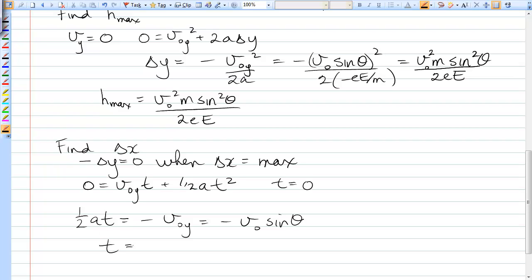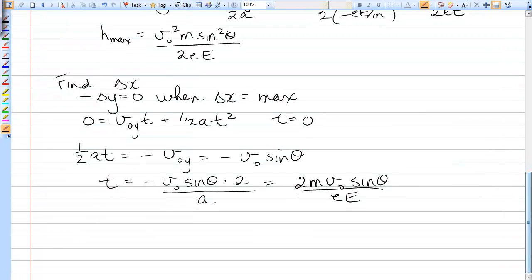And so we can get that the time when that proton is at its maximum horizontal position would be equal to negative V0 sin theta times 2 over A, or 2M V0 sin theta over eE, because A is just eE over M, negative. So that's where the negative went.